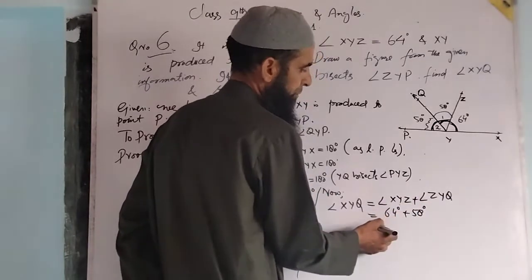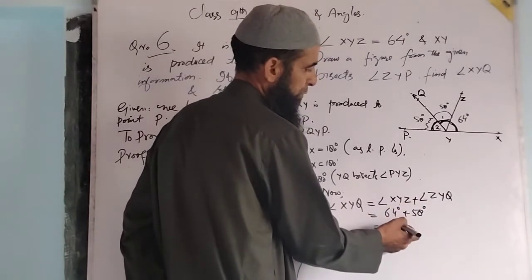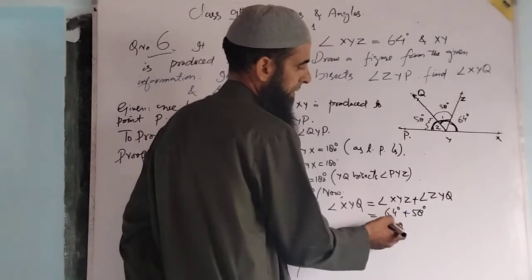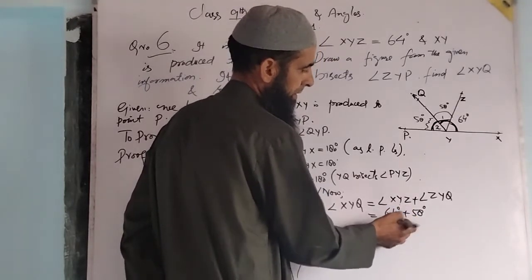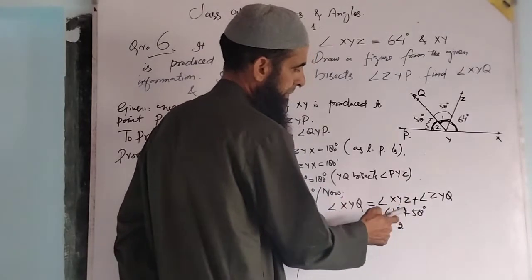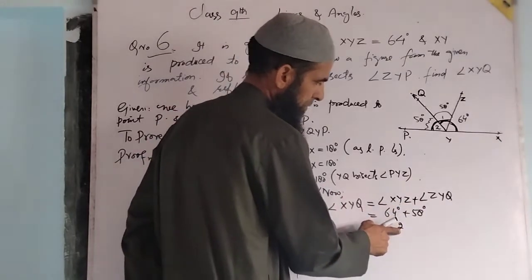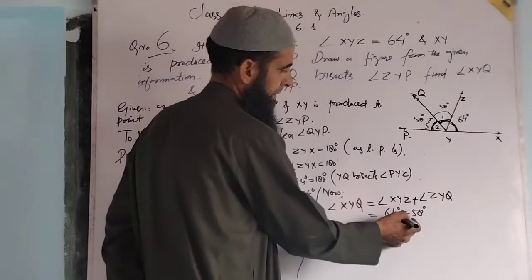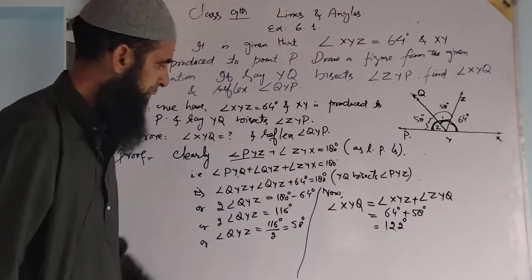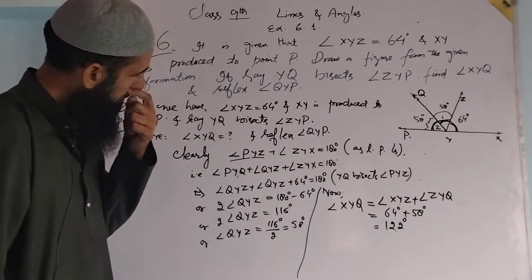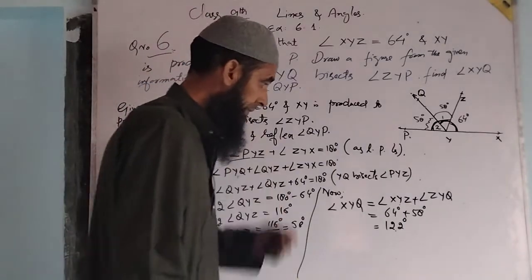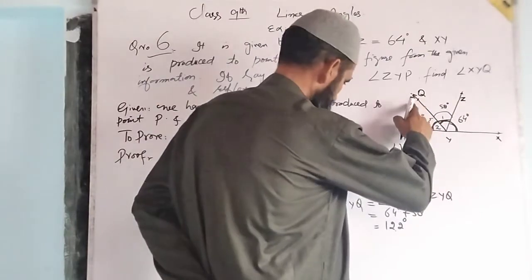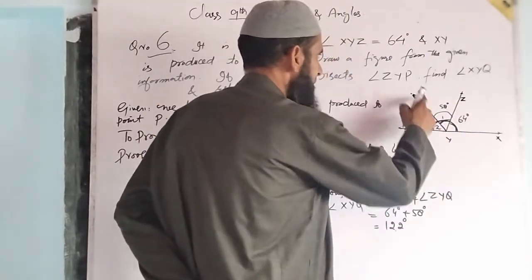That gives us 8 plus 4 equals 12 — so 64 plus 58 equals 122 degrees. Therefore, angle XYQ equals 122 degrees.